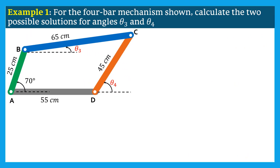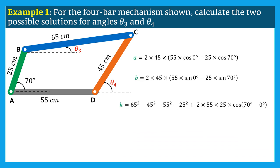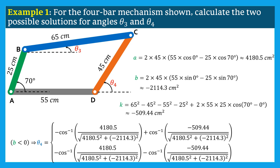In this first example, we are asked to calculate the angles θ3 and θ4 for the 4-bar mechanism shown. All bar lengths are given, and the crank angle is also given. In order to calculate the angles, we use the equations established previously. First, we calculate the constants A, B, and K considering the values of θ1, θ2, R1, R2, R3, and R4. Using a calculator, A = 4180.5 cm², and K = −509.44 cm². As B is negative, we use the corresponding expression for θ4. The two solutions of θ4 are 69.41 degrees and −123.1 degrees.